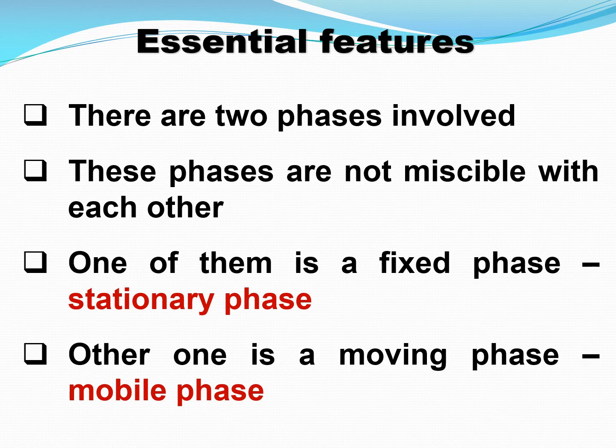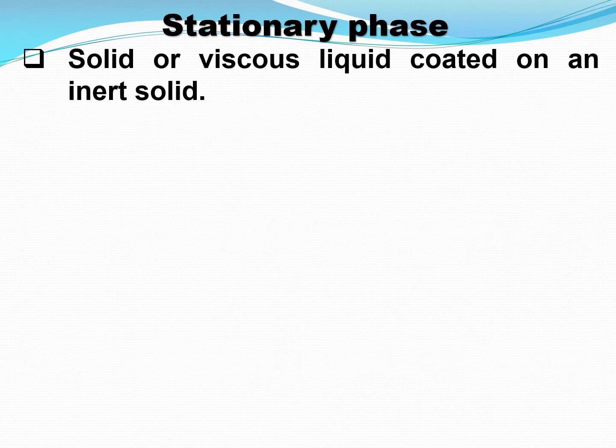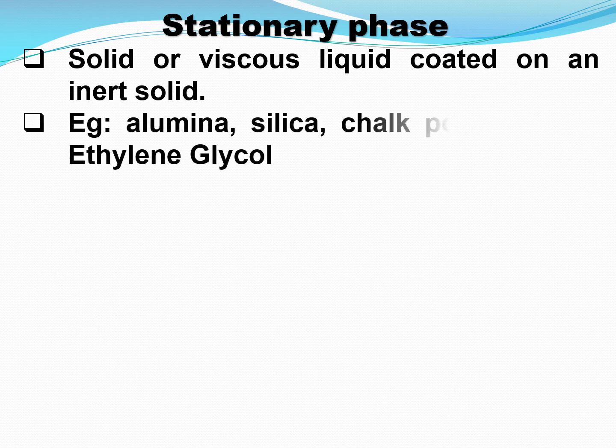The other phase is always moving and that is called the mobile phase. So two phases are there: stationary phase and mobile phase. The stationary phase can be a solid or a viscous liquid coated on an inert solid. A gas can never be taken as a stationary phase.